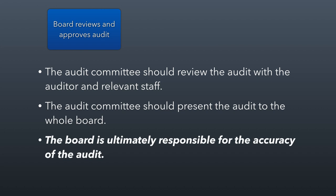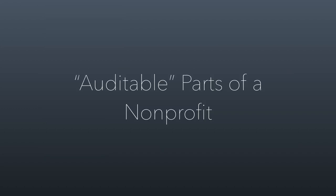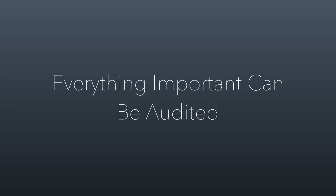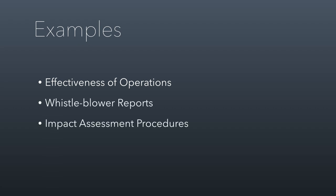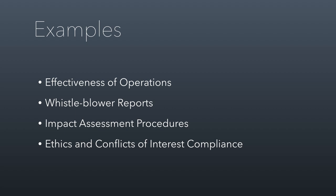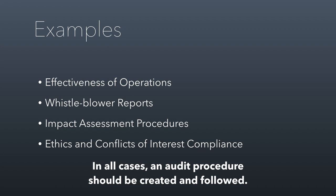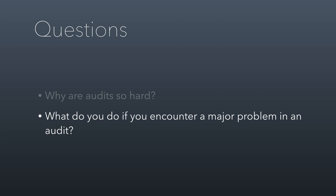The board approves the audit if they feel it was done properly. There may be issues that come up in the audit process where the auditor recognizes accounting that's been done improperly — it's the board's job to make sure that's all being fixed. There's a lot to a nonprofit that can be audited. Everything important can be audited and probably should be. You don't have to audit just financial statements — you can audit effectiveness of operations, whistleblower reports, impact assessment procedures, and you should audit your conflict of interest compliance every year. An audit procedure should be created and followed when something is important, just to check in on a regular basis to make sure proper processes and policies are being followed. We'll discuss these questions in class together — see you all in class.